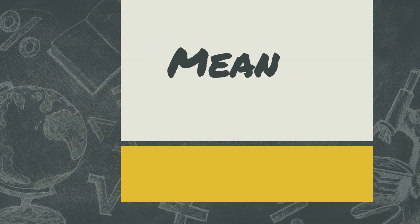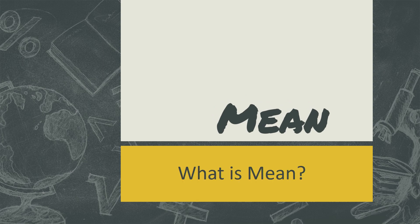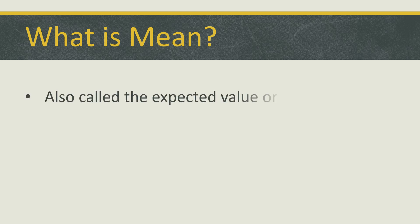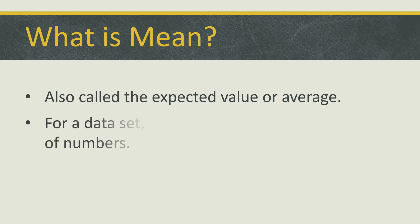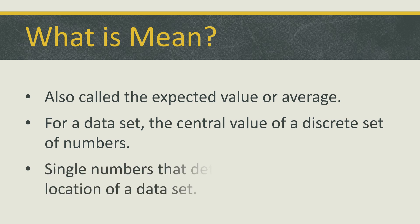Let's first discuss mean. What is mean? It is also called the expected value or average for a data set — the central value of a discrete set of numbers, that single number that determines the central location of a data set.